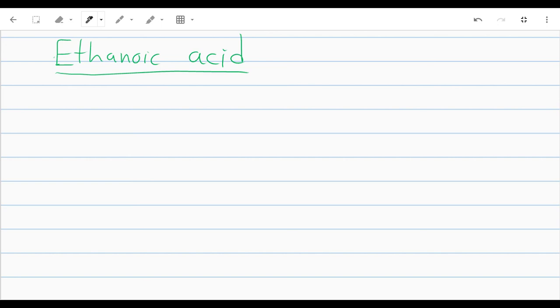How would we draw ethanoic acid? Well, ethanoic acid means two carbons here, and it's single-bonded because we have 'an' after it. So I'm going to start by writing out my two carbons, and then this is a carboxylic acid,